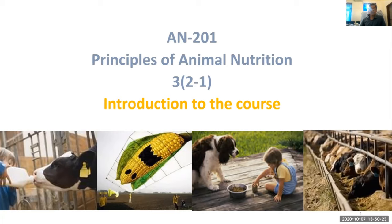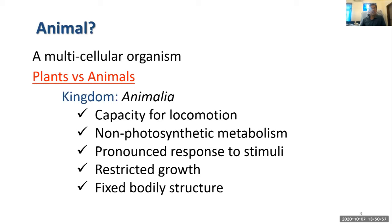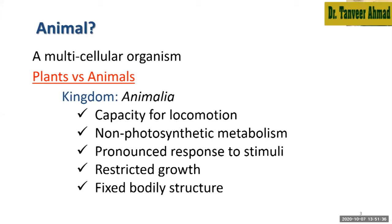This is AN201. This is the first lecture — an introduction to the course and to some basic terms. It is the principles of animal nutrition. First of all, what do we mean by animal? An animal is a multicellular organism. When asked about the major differences between plants and animals, most students could not get the points. Animals belong to the kingdom and have particular characteristics that make them different from plants.